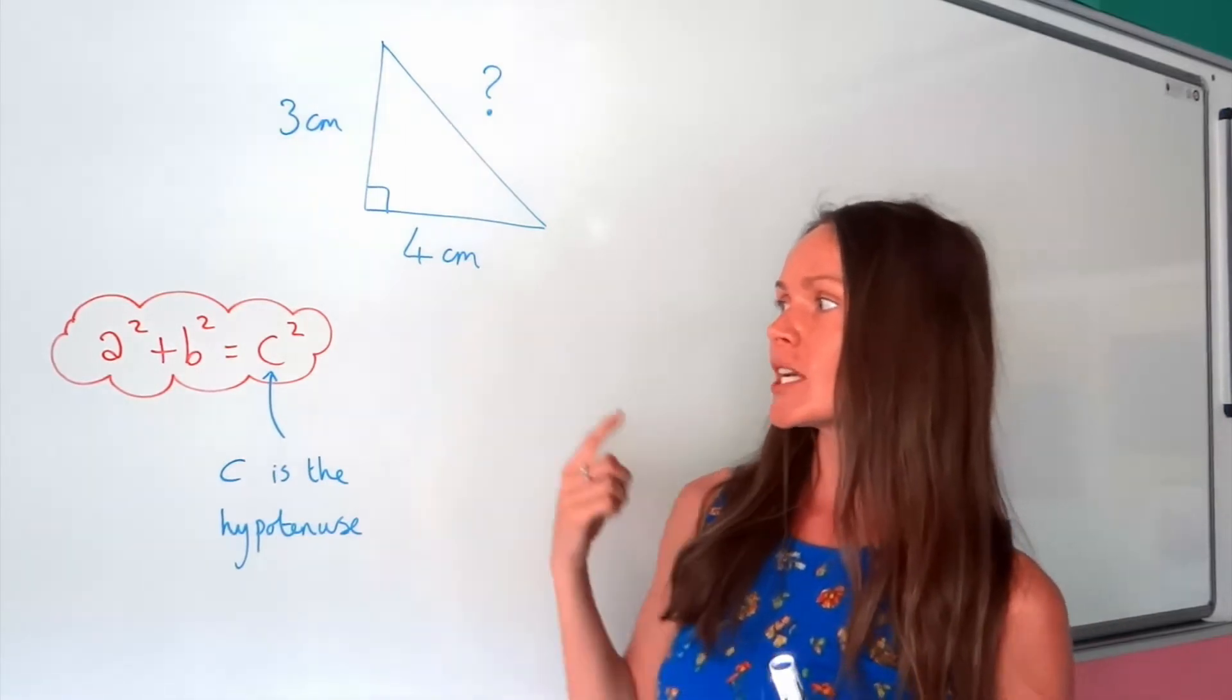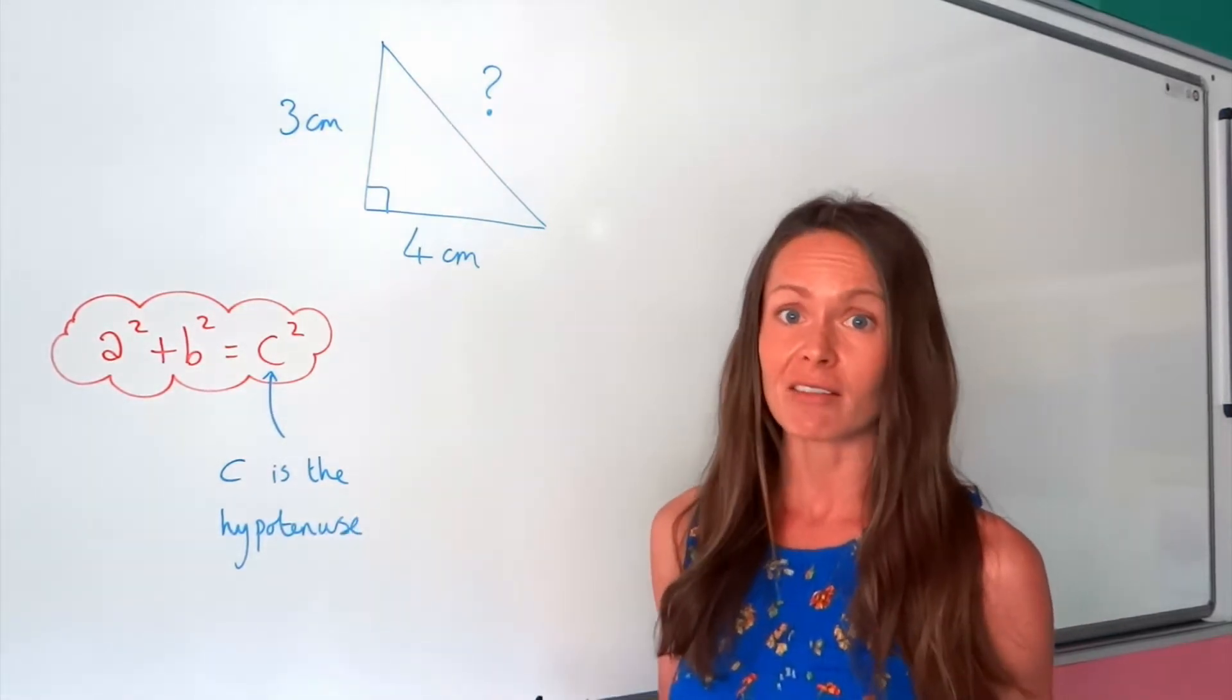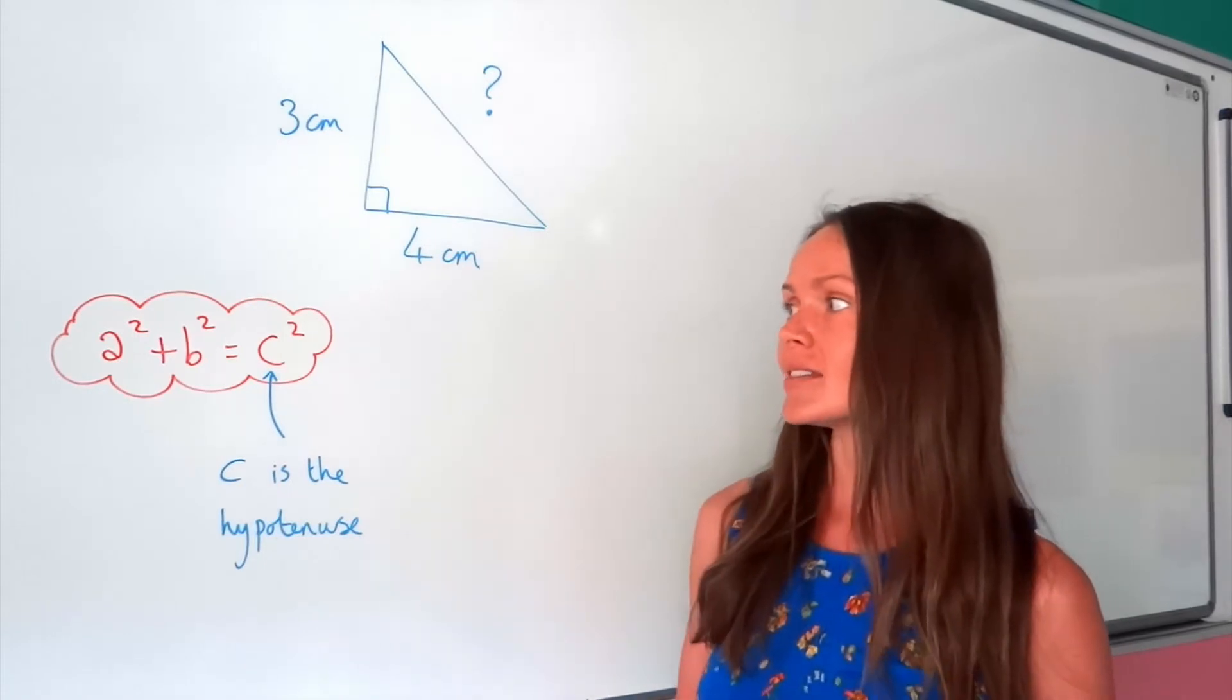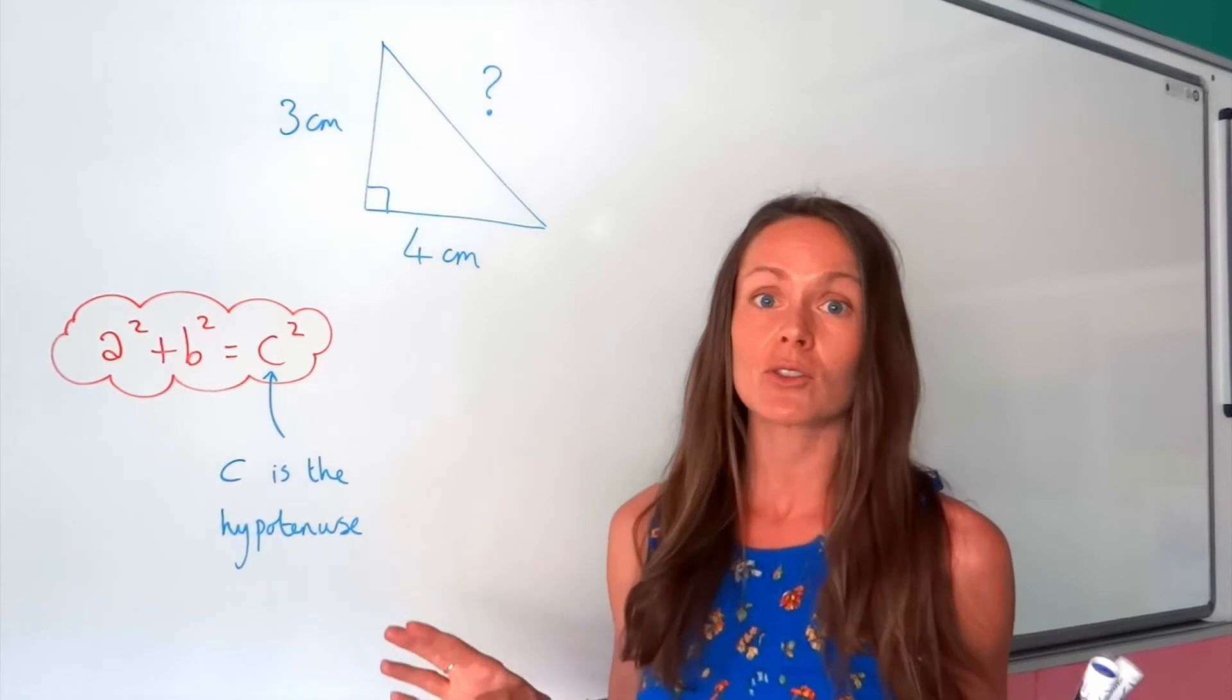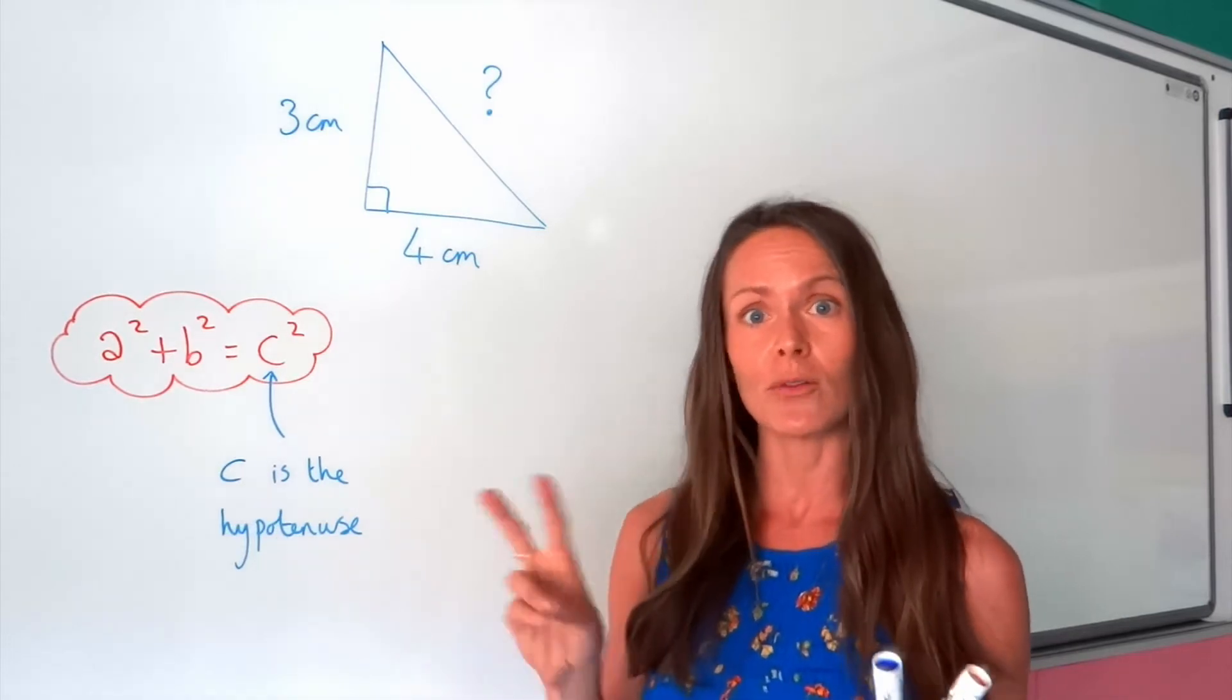So we usually refer to this formula as Pythagoras, or Pythagoras' theorem. And what it does is it calculates the length of a side in any right-angled triangle as long as you know two of the other sides.